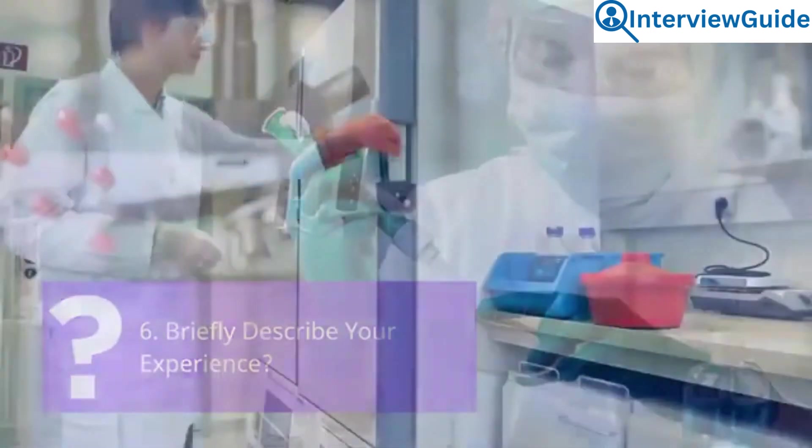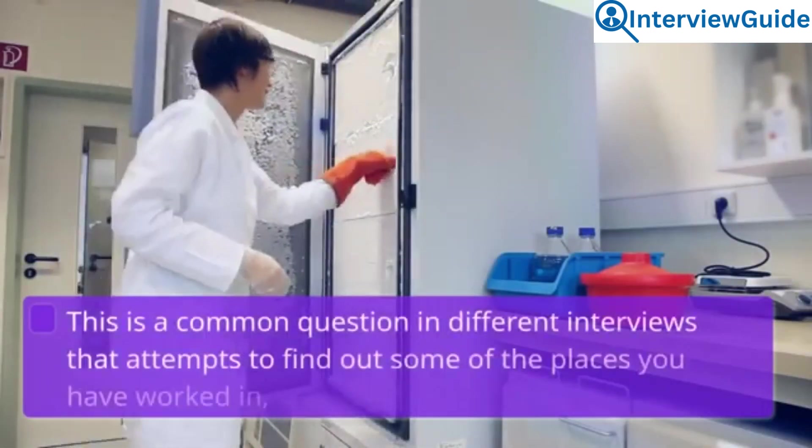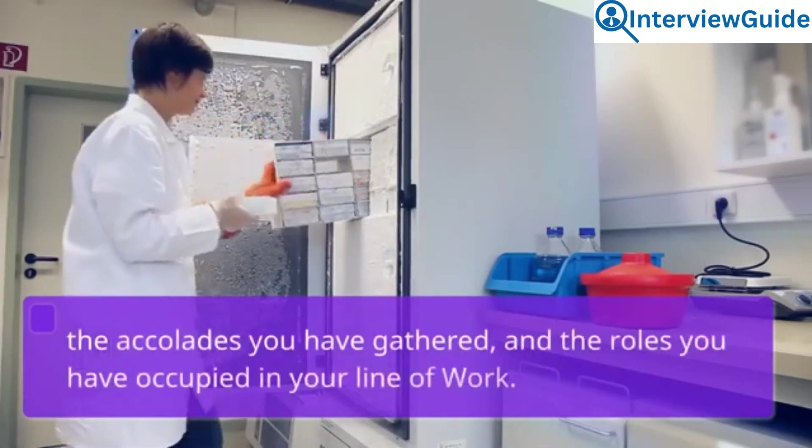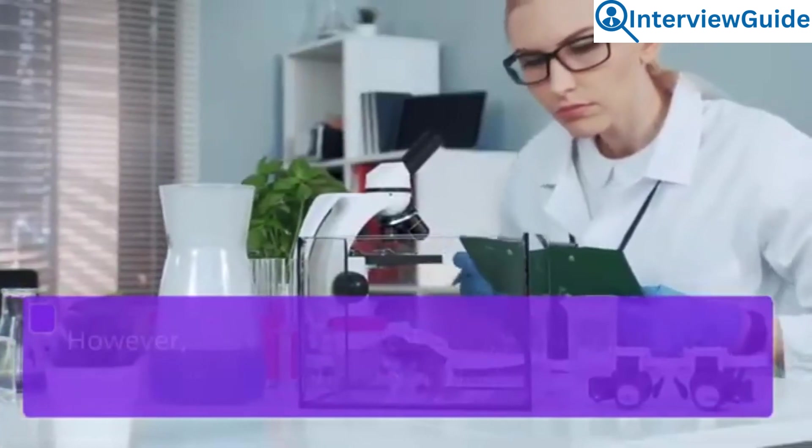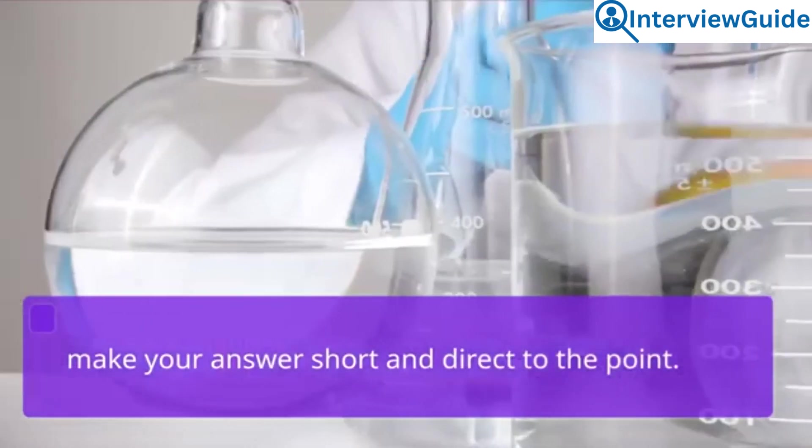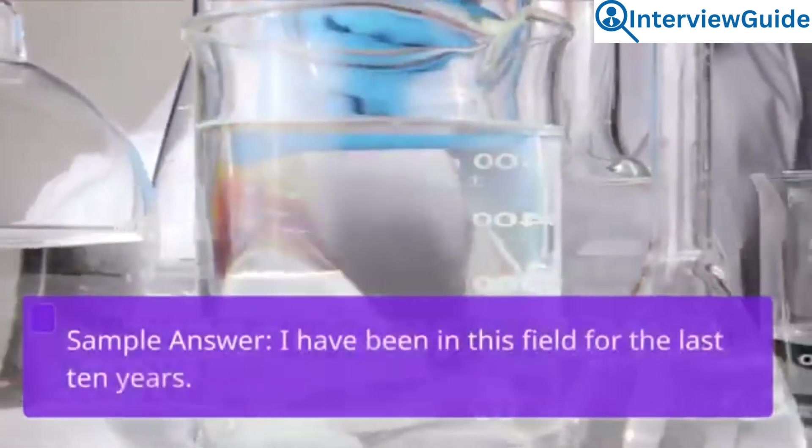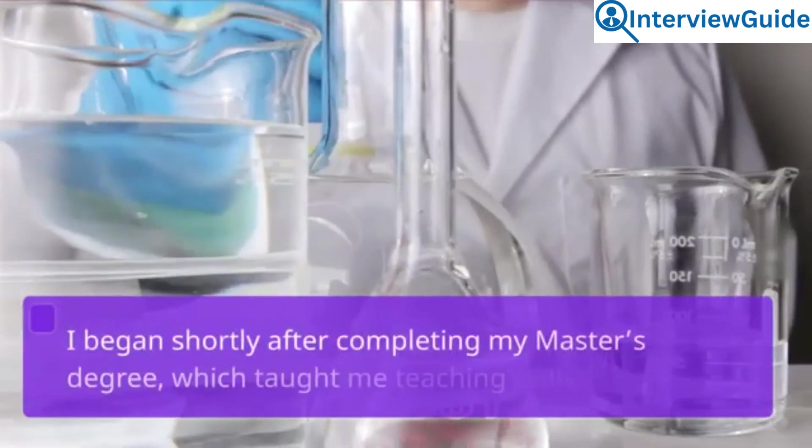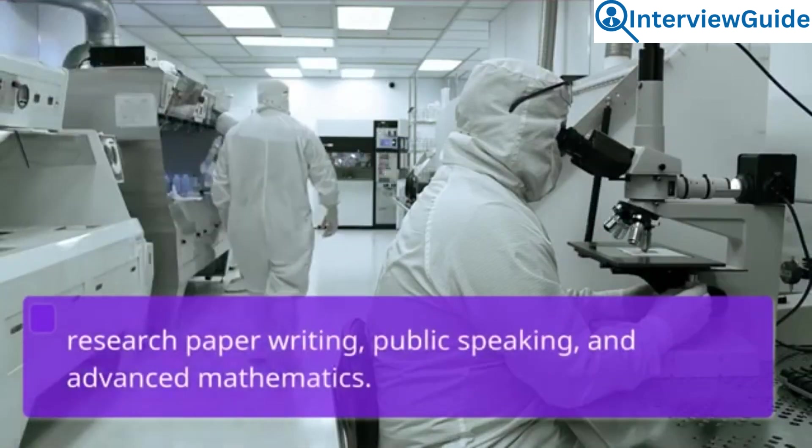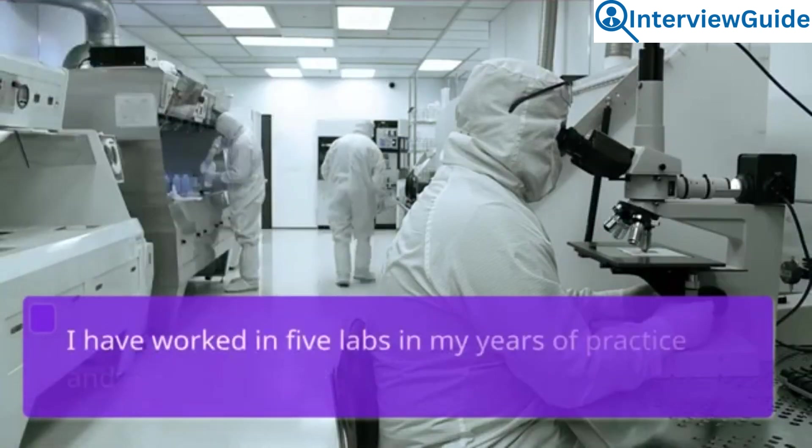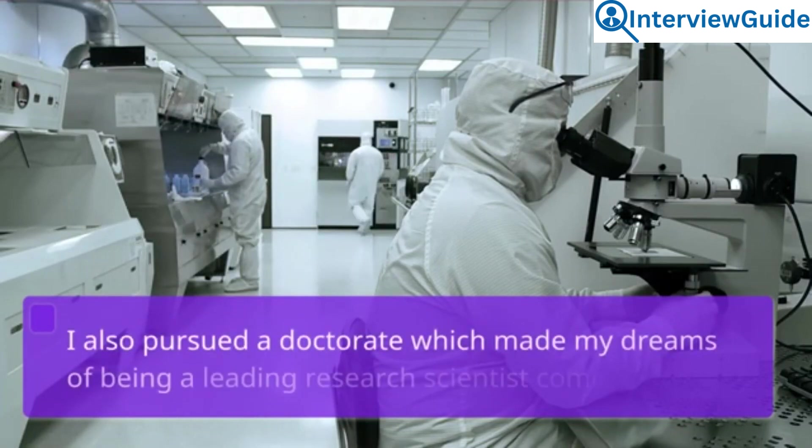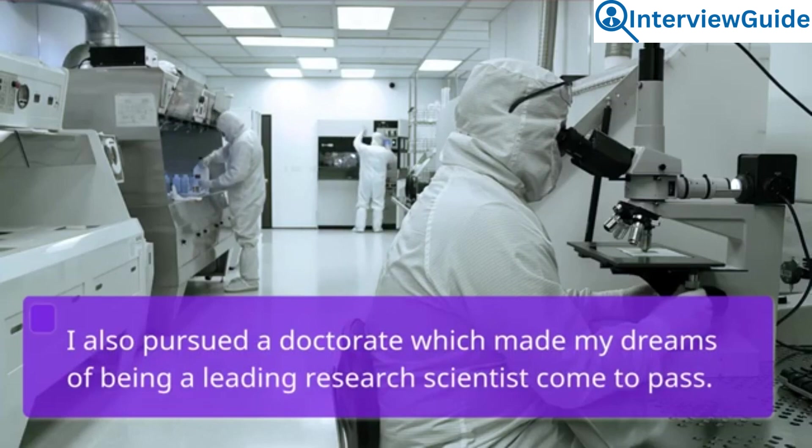Question 6: Briefly describe your experience. This is a common question in different interviews that attempts to find out some of the places you have worked in, the accolades you have gathered, and the roles you have occupied in your line of work. However, since most of this information is captured in your CV and work resume, make your answer short and direct to the point. Sample answer: I have been in this field for the last 10 years. I began shortly after completing my master's degree, which taught me teaching skills, research paper writing, public speaking, and advanced mathematics. I have worked in five labs in my years of practice and a record five schools. I also pursued a doctorate which made my dreams of being a leading research scientist come to pass.